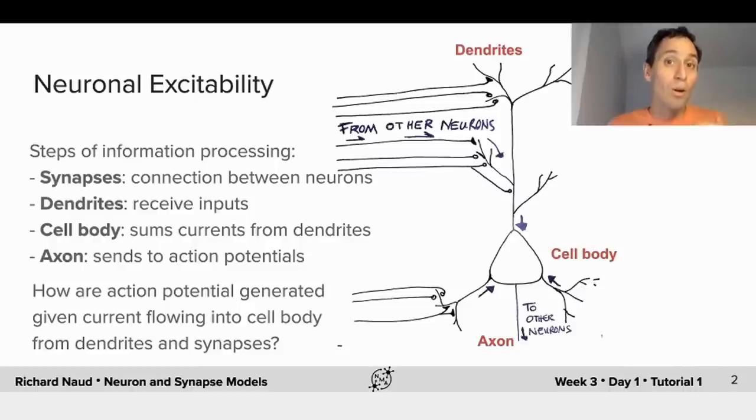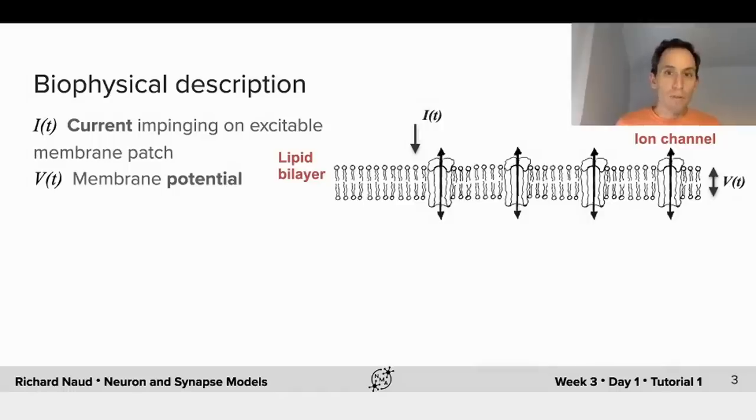So if we zoom on a patch of membrane, we have a current that is possibly time-dependent, that impinges on that lipid bilayer. And this will influence the membrane potential, that is, the difference in electrical potential between inside and outside of the cell.